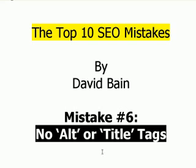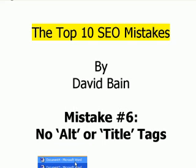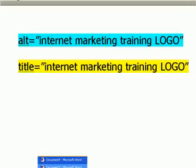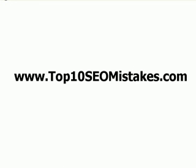That's mistake number six of the top ten SEO mistakes: no alt or title tags. You have to include them within images, but you can also include title tags within text links as well. For more information, visit www.top10seomistakes.com.